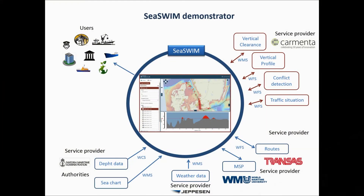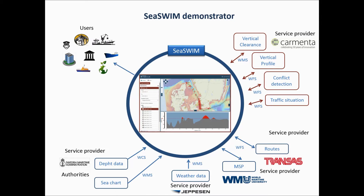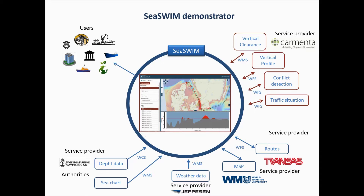During the Mona Lisa 2 project, Carmenta has used the C-SWIM concept to set up a number of geographical web services from different project partners. To demonstrate and prove the concept of C-SWIM, Carmenta has developed a web client to consume and visualize web services, and has also created several analysis services, each exposed as a service that can be used by any application.